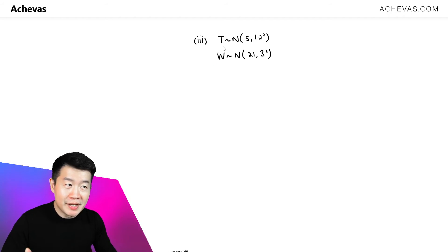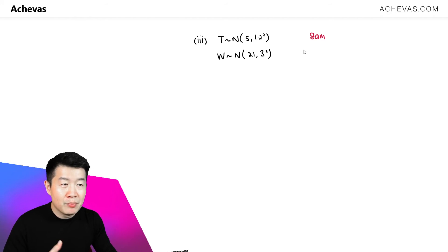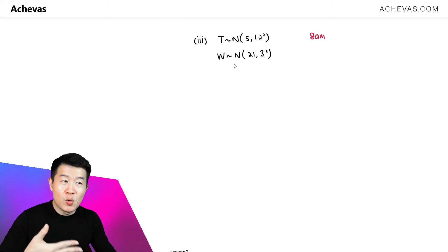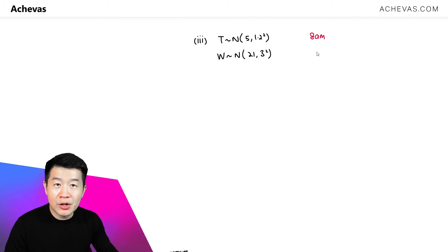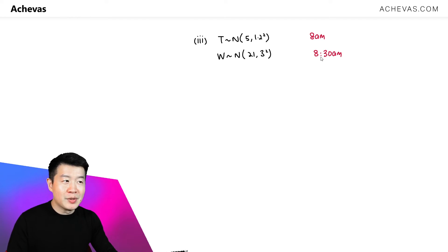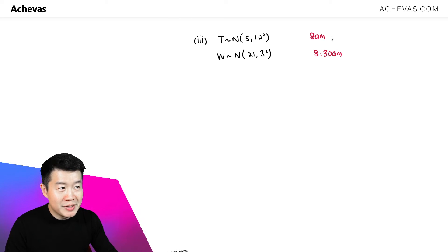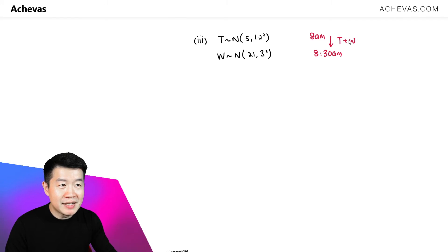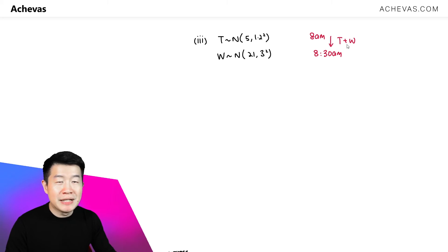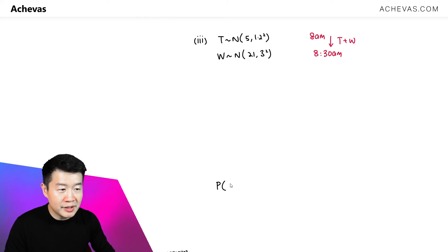T is the number of minutes past 8am before James leaves home. W is the amount of time James takes walking to work. From 8am, for James to reach work without being late, he has 30 minutes — anything beyond 8:30 is considered late. T plus W represents the total time from 8am to when he arrives at work, so we calculate P(T + W > 30).